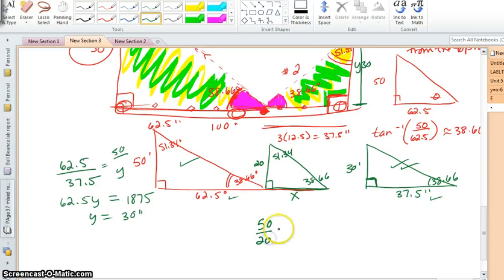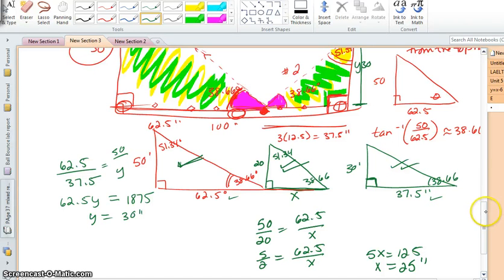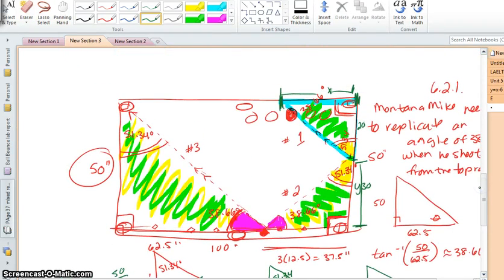50 is to 20 as 62.5 is to x takes us from this triangle now to this triangle. Or 5 over 2 will make this a little easier to solve. So 5x equals 62.5 times 2 or 125, x equals 25 inches. So Montana Mike is going to place his ball 25 inches from the edge of the pool table.